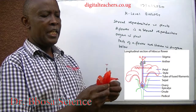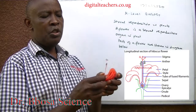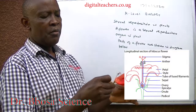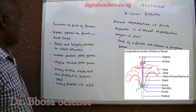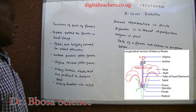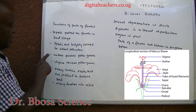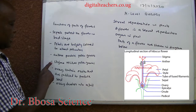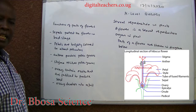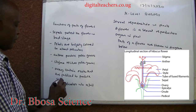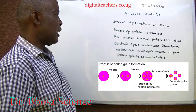These protect the flower during the bud stage. We have the petals that attract pollinators. Inside we have the stigma to receive pollen grains. We have the anthers to produce pollen grains. Below we have the ovary that contains ovules. Sepals protect the flower in the bud stage. The petals are brightly colored to attract pollinators. The anthers produce pollen grains. The stigma receives pollen grains. The ovary contains ovules that are fertilized to produce seeds. The ovary develops into a fruit.